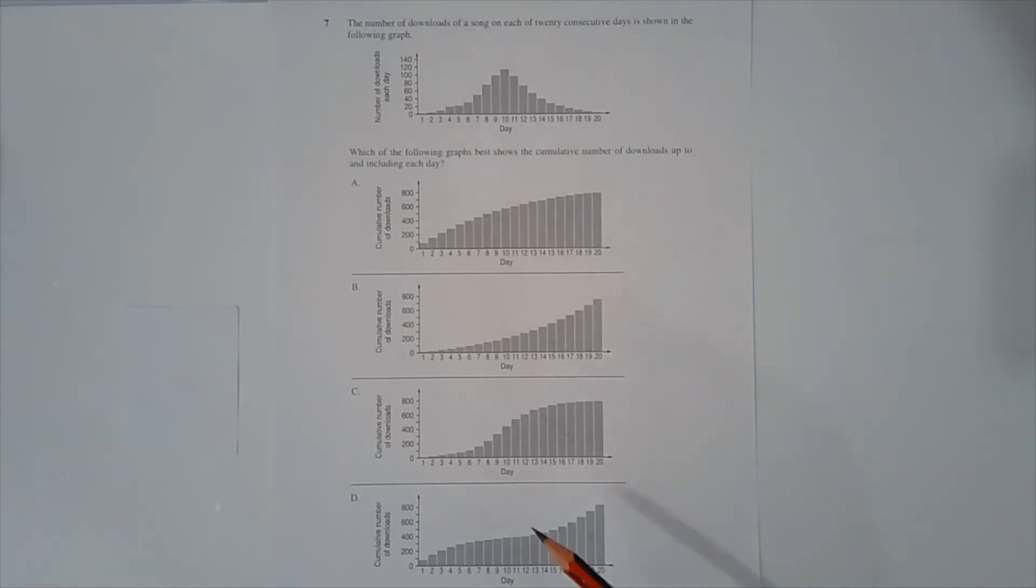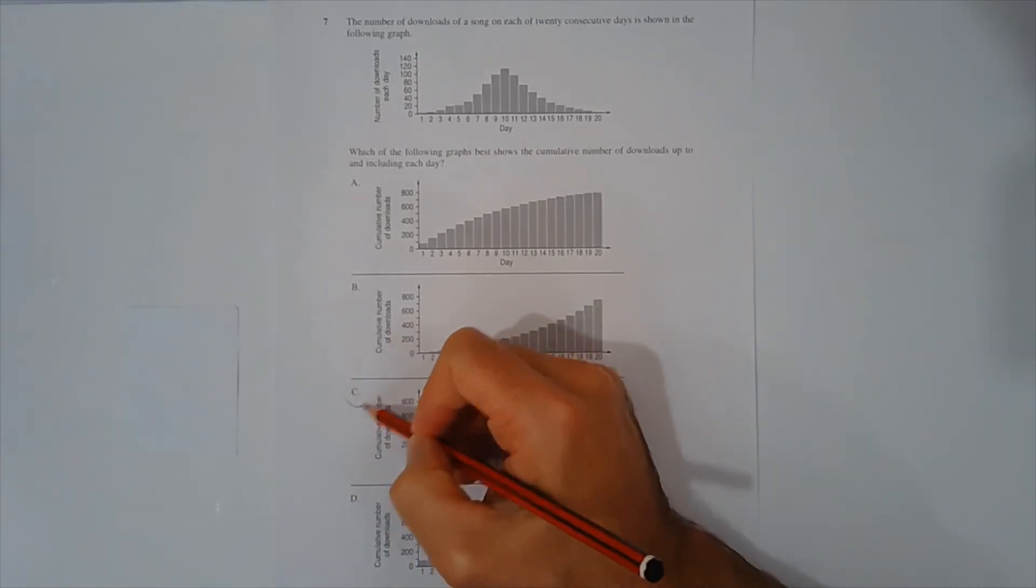And the option that shows that is option C. So we can see that between days 1 and 2, the change is minimal there. Between days 19 and 20, the change in height is minimal there. But in days 9, 10, and 11, that's where you get the greatest change. So the answer is option C.